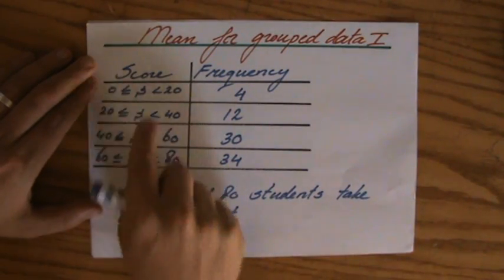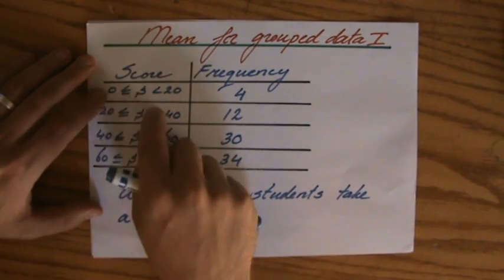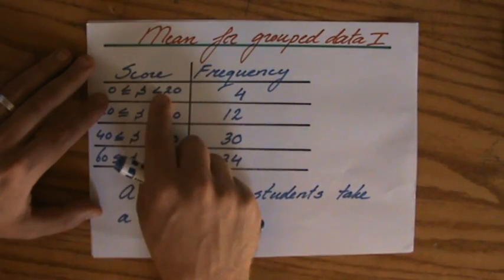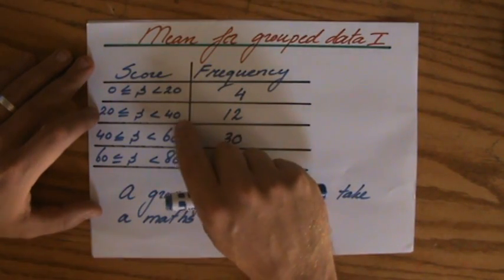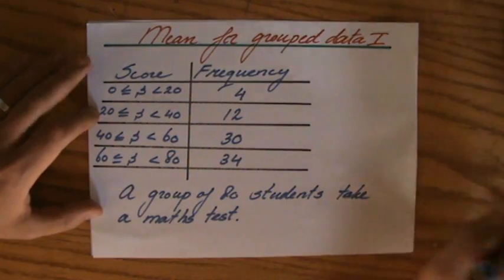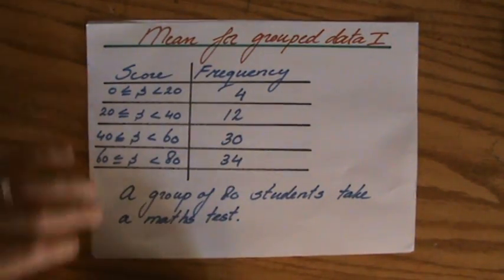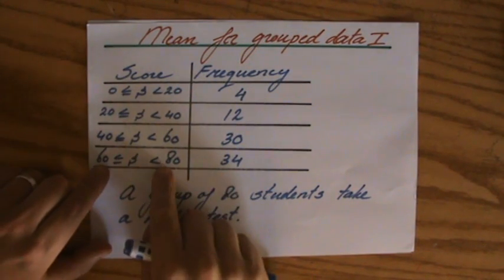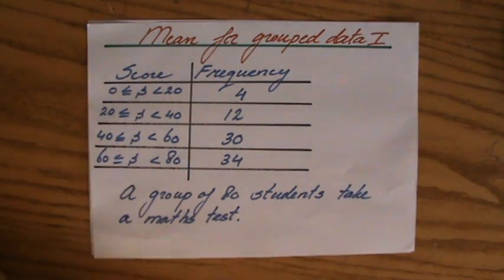Well, these are groups. So the score, we're talking about 80 students took a maths test. And the score for the test between 0 and 20, 4 students have a score like that. Between 20 and 40, 12 students have a score like that. Between 40 and 60, 30 students. And between 60 and 80, 34 students. And this test is out of 80 points. So the maximum score is 80.